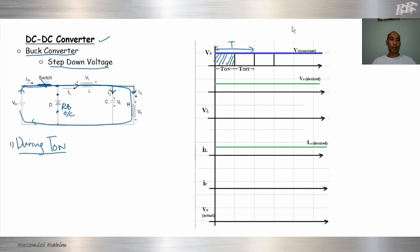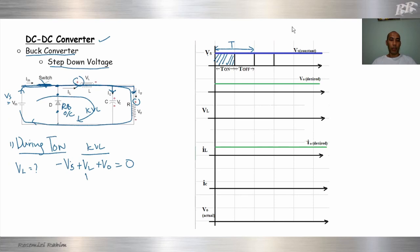So what is VL? By using KVL around this loop, we get: minus Vs plus VL plus V0 equals zero. So VL is equal to Vs minus V0. During the on period (switch on), VL equals Vs minus V0.